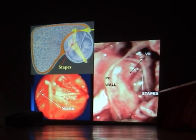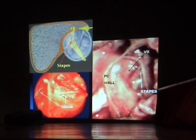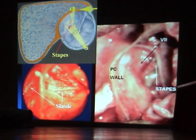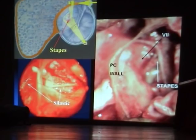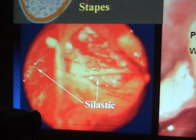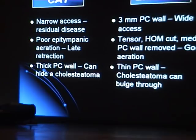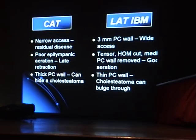See this thin posterior canal wall — three millimeters — it cannot conceal any disease. This shows the path of aeration lined with silastic, the stapes, and the mastoid lining. The two-cartilage technique again: from the depression in the inferior annulus to the head of the stapes, second cartilage for pressure contact, with silastic lining providing an aeration path to the round window and mastoid. With the conventional intact canal wall technique, narrow access results in residual disease, poor aeration, and a thick posterior canal wall that can hide cholesteatoma.